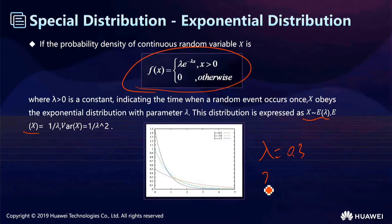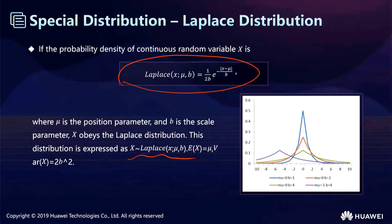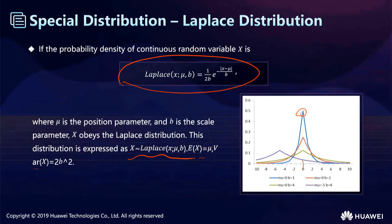For example, if lambda equals 0.3, the probability that a component fails after one hour is about 28%. The Laplace distribution has a density formula where u is a location parameter and b is a scale parameter. X obeys the Laplace distribution, denoted Laplace(u, b), with expectation u and variance 2b squared. As the image shows, it looks like two exponential distributions placed back-to-back. When x equals u, it has the largest value. The Laplace distribution plays an important role in robust regression and JPEG image compression.